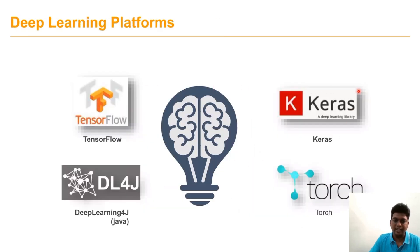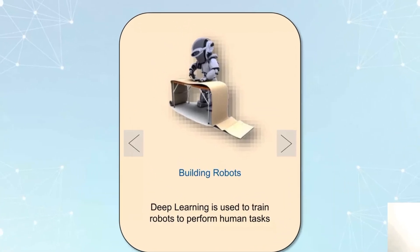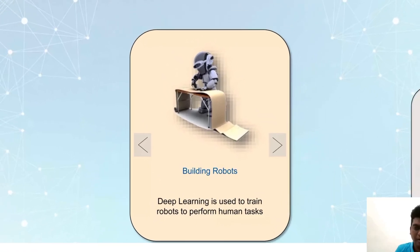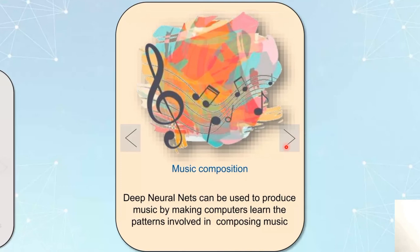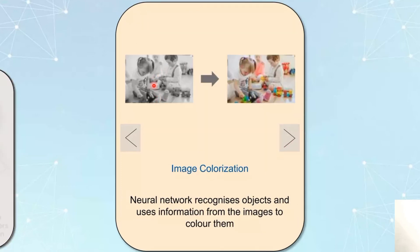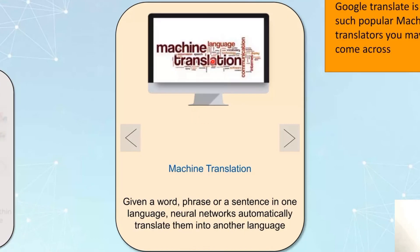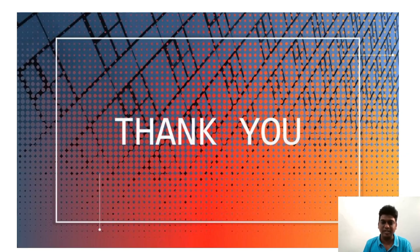The deep learning platforms we use include TensorFlow, Keras, PyTorch, and Deep Learning for Java. Major applications include building robots to perform human functions autonomously using AI, composing music, colorizing grayscale images, and automatically translating one language to another — given a word, phrase, or sentence, it can be translated into another language. I hope you understand the concept of artificial neural networks in deep learning. Meet you in the next video. Goodbye from Vijay.